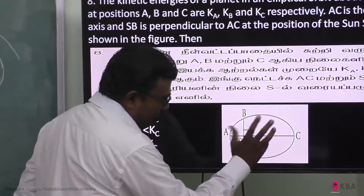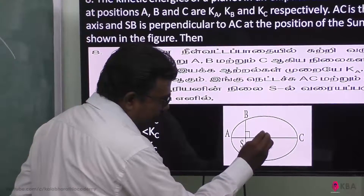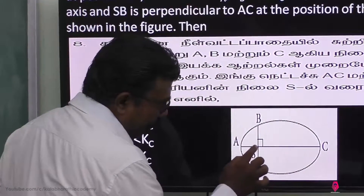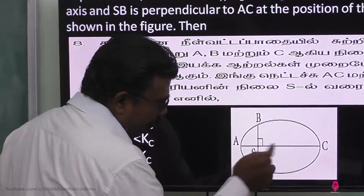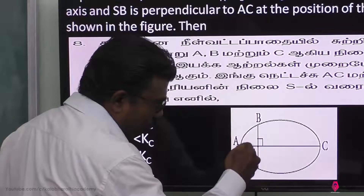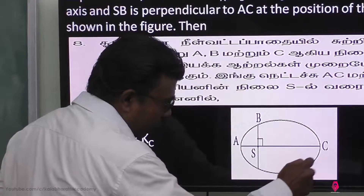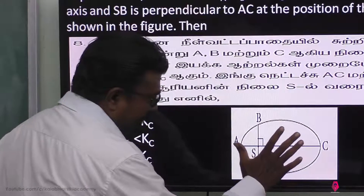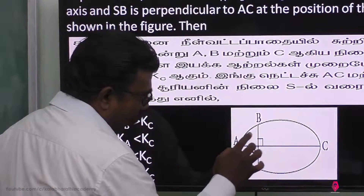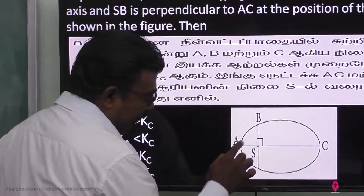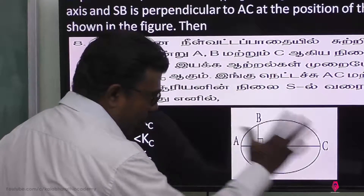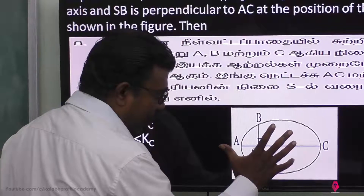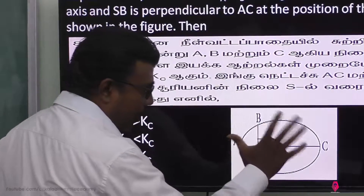This is a simple planetary system. The sun is at the center and a planet revolves around it. The energies are Ka, Kb, Kc. Consider the positions — this is the maximum and minimum.